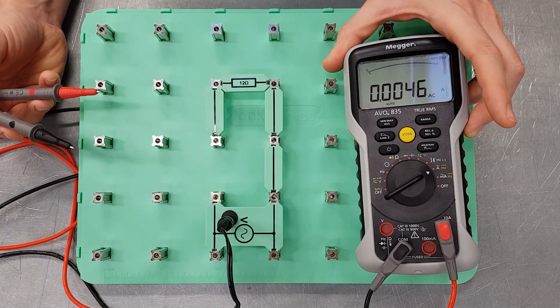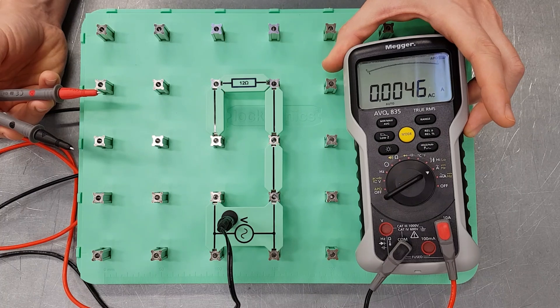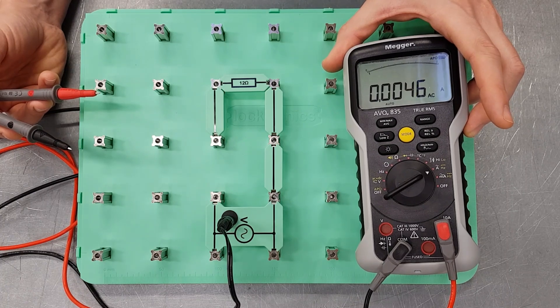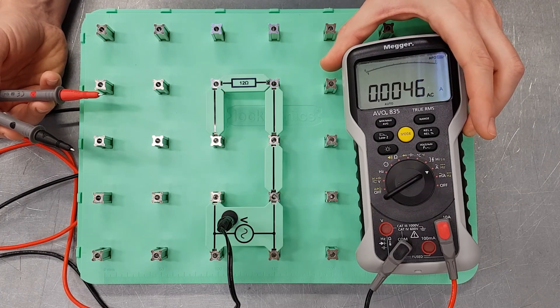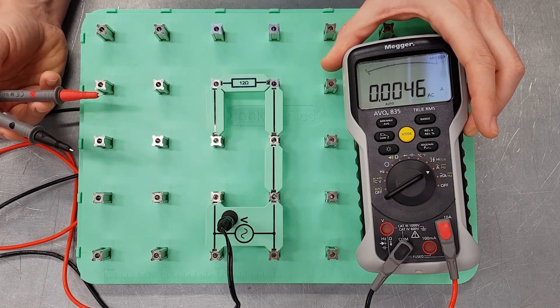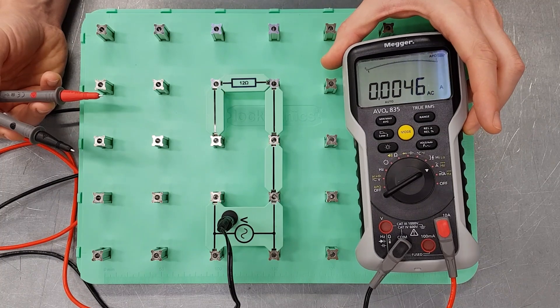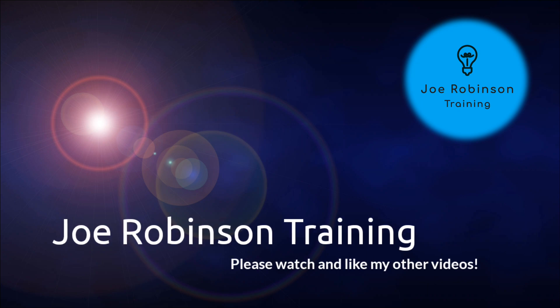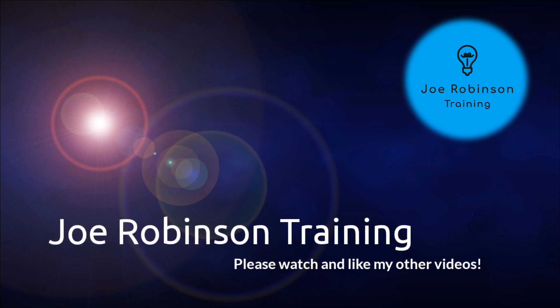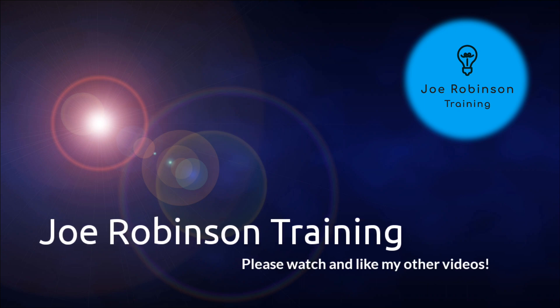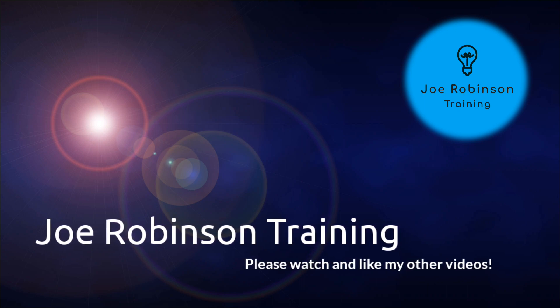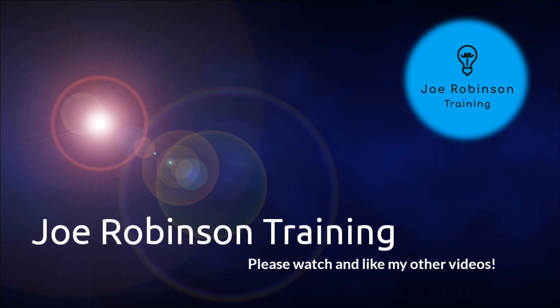So we've seen in this video how to set up a multimeter to measure current. We know that the multimeter needs to be connected in series. And we've just seen a couple of things that will hopefully help us not to damage our multimeter while we're carrying out this testing procedure. So as always, thank you for watching. We'll see you next time.